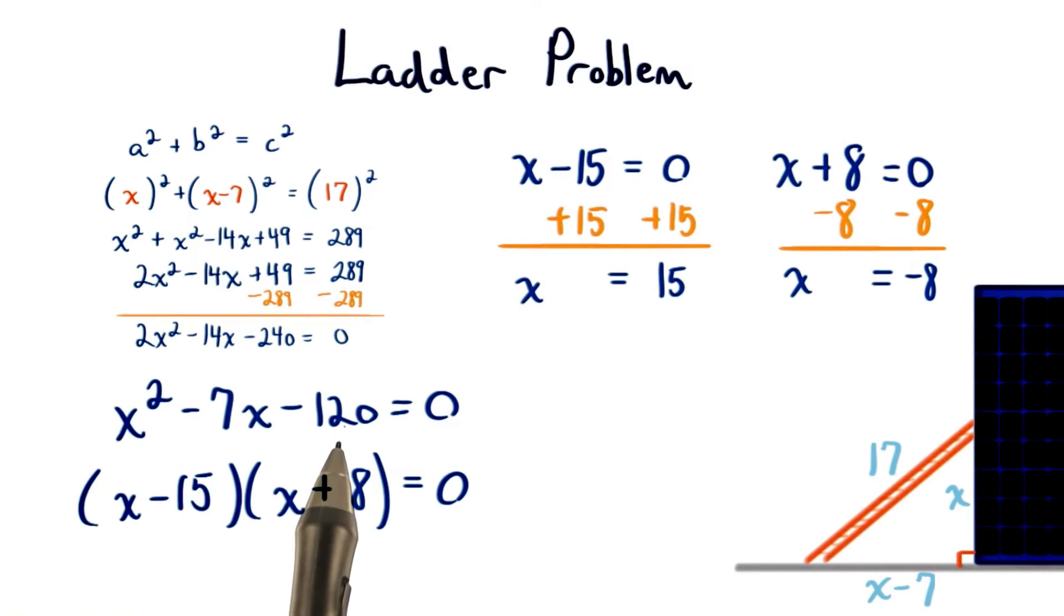We take our quadratic expression and we factor it by finding the factors of negative 120 that sum to negative 7. Those factors are negative 15 and positive 8.